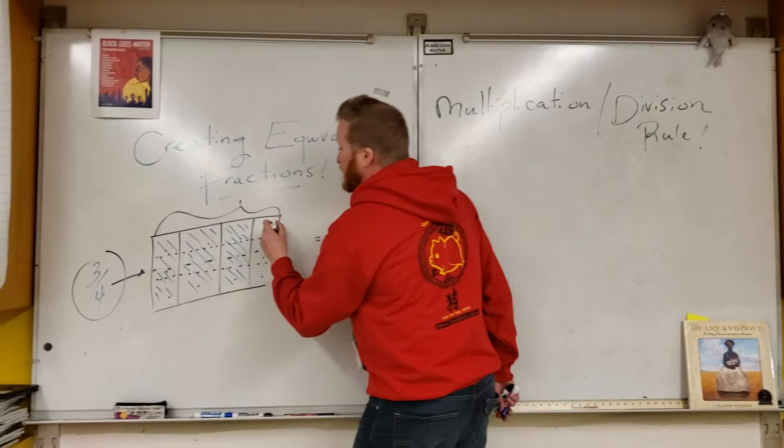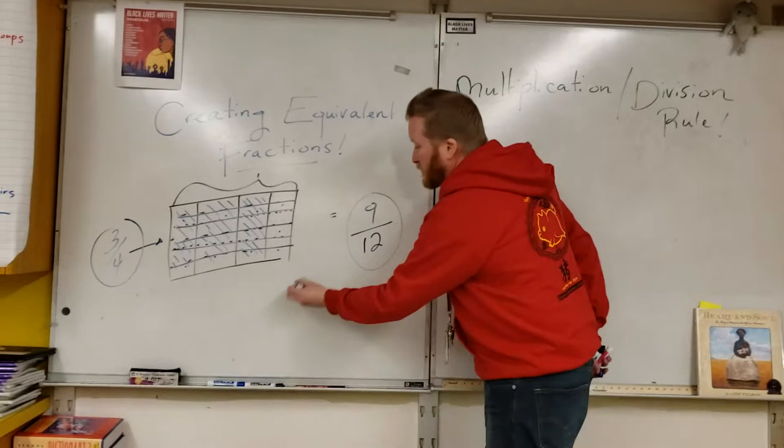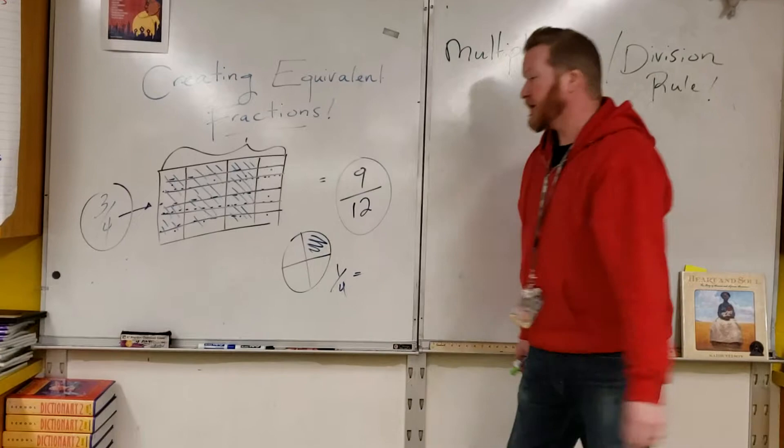We could actually continue with this process, and as long as we remembered where our lines were, we could make all kinds of equivalent fractions. It also works for our friend, the circle model.